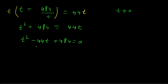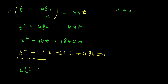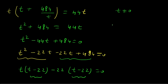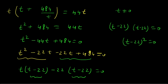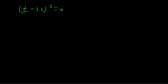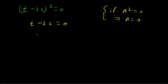This is a quadratic equation in terms of t. We apply middle term splitting: t² − 22t − 22t + 484 = 0. Taking common factor t from the first two terms gives t(t − 22), and taking −22 from the last two terms gives −22(t − 22). So (t − 22)(t − 22) = (t − 22)² = 0, which means t − 22 = 0, so t = 22.